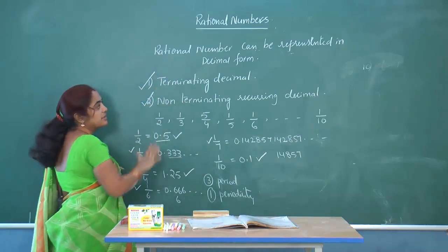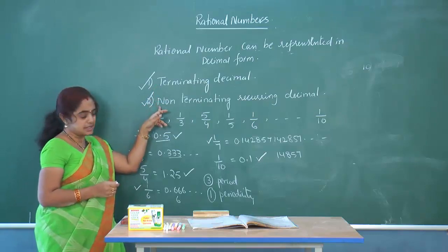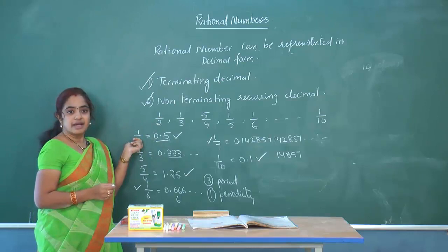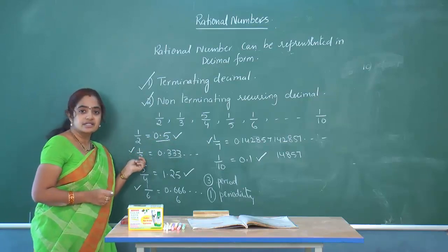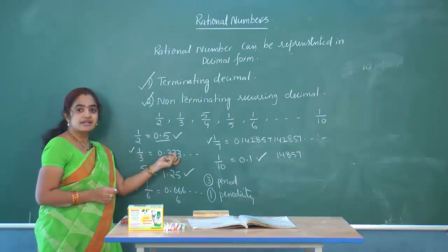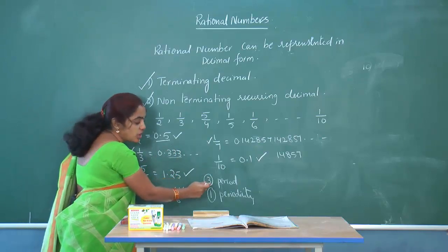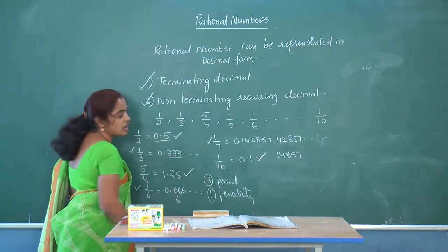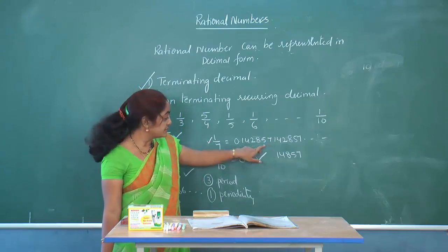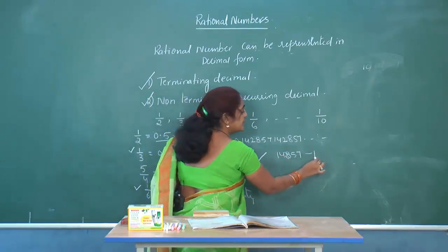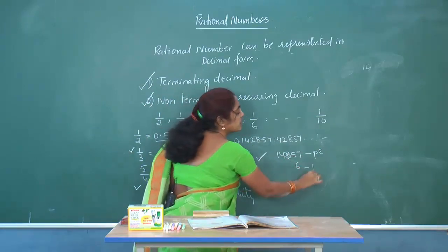A rational number can be represented in decimal form as either a terminating decimal or a non-terminating recurring decimal. In a terminating decimal, the remainder is 0 and the decimal part is finite. In a non-terminating recurring decimal, the remainder is never 0 and the decimal part is infinite. The repeating block is called the period, and how many digits are repeating is called the periodicity. For 1/7, the period is 142857 and the periodicity is 6.